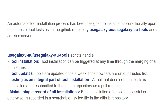Testing is an integral part of this process. A tool that does not pass its tests upon installation is uninstalled and resubmitted as a pull request. Each tool installation is recorded as a row in a searchable TSV file in the GitHub repository.